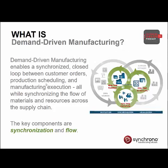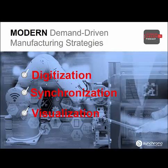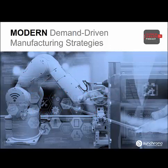Before we get started, let's review our definition of demand-driven manufacturing. Demand-driven manufacturing enables a synchronized, closed-loop between customer orders, production scheduling, and manufacturing execution, all while synchronizing the flow of materials and resources across the supply chain. The key components are synchronization and flow. When we refer to modern demand-driven manufacturing, we're layering on three key elements: digitization, synchronization, and visualization. I'll go through each of these in more detail with actual business use cases, and then we'll talk about strategies for using these elements to enable smart manufacturing.